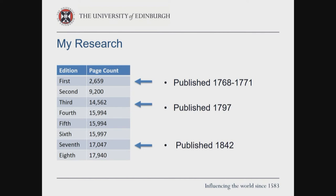So what does this mean for my research? My Transkribus model has helped generate a corpus of text with a reasonably low character error rate, providing a good quantity of data that I'll actually be able to use. The ability to process editions at scale is crucial given such a large quantity of text. Initially, to narrow my scope, I'll be looking at the first and seventh editions — 2,659 pages and 17,047 pages respectively — which is a very large quantity of text to work with.